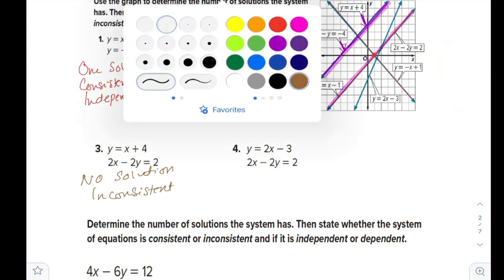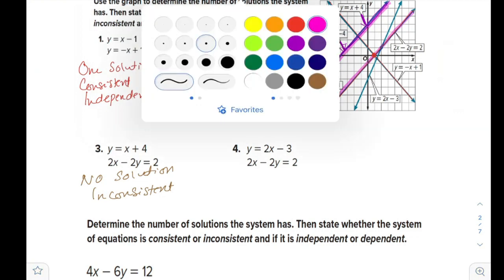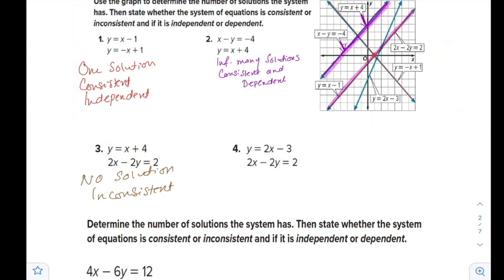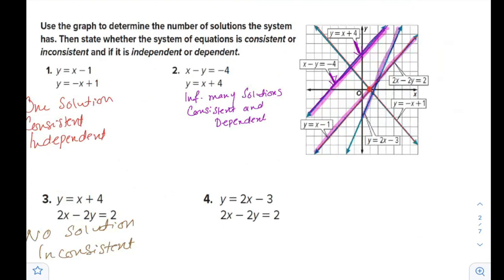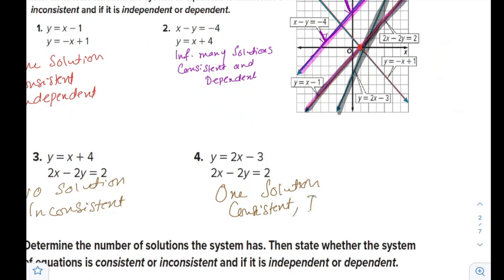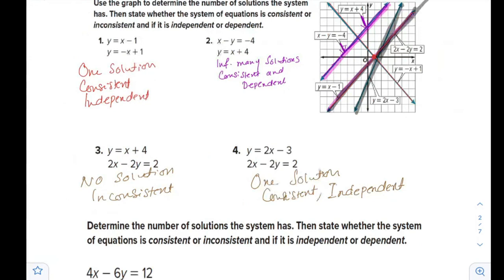Question 4: We have y equals 2x minus 3, which is this one, and 2x minus 2y equals 2. Now they are meeting at a point. That means there is one solution, and that means it is consistent and independent. So this was how to classify the systems if you have the graphs. It is very easy.